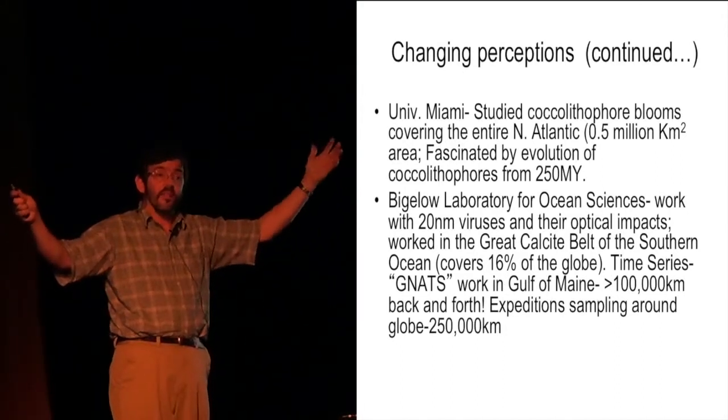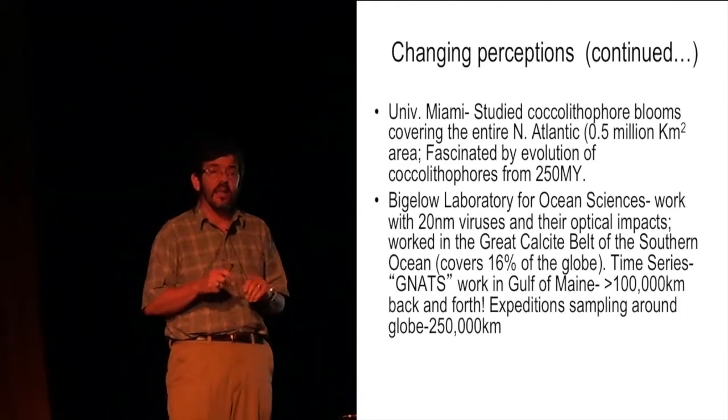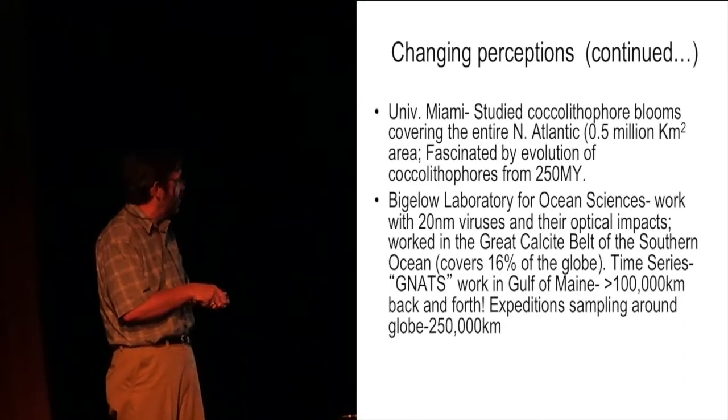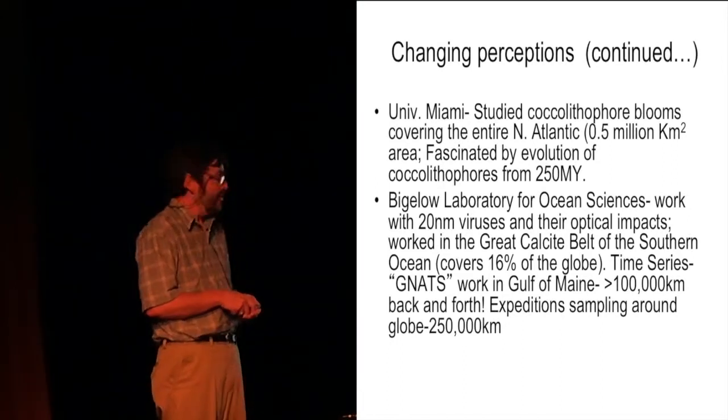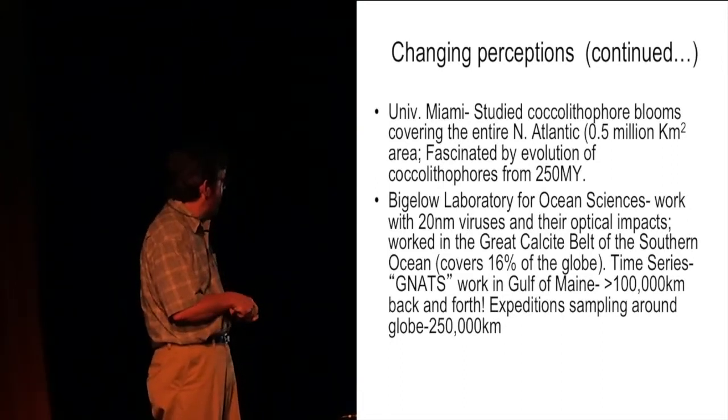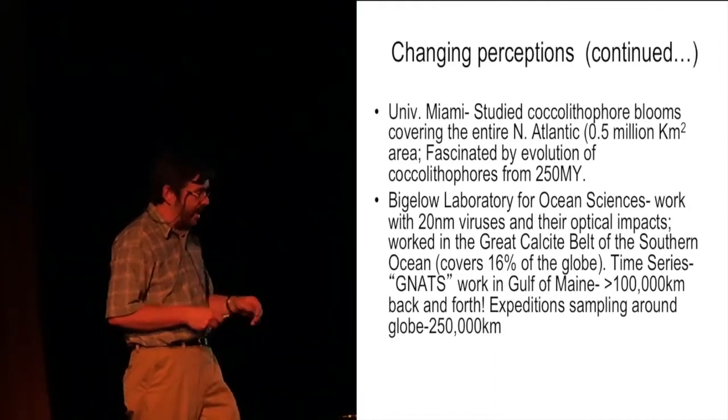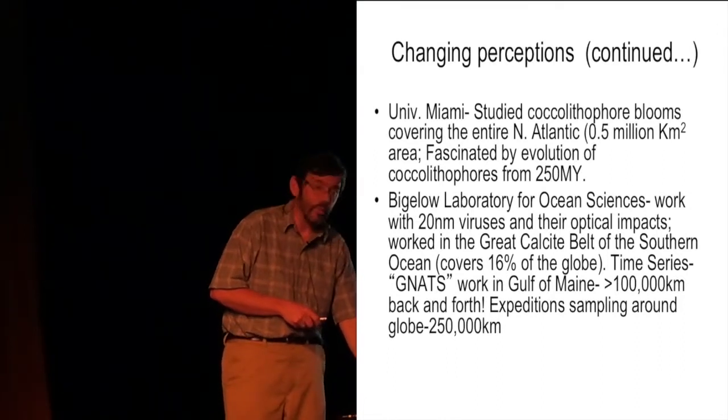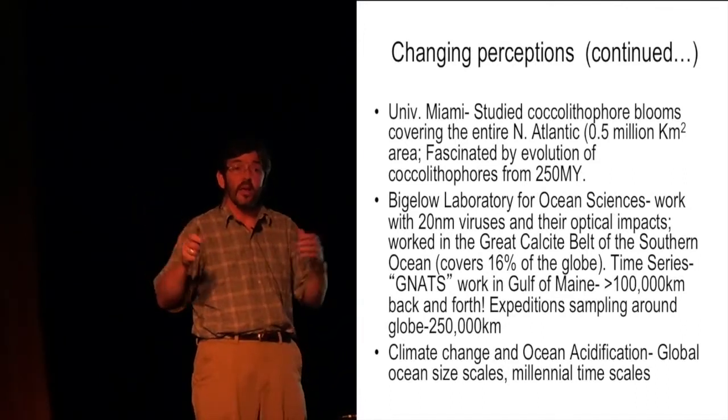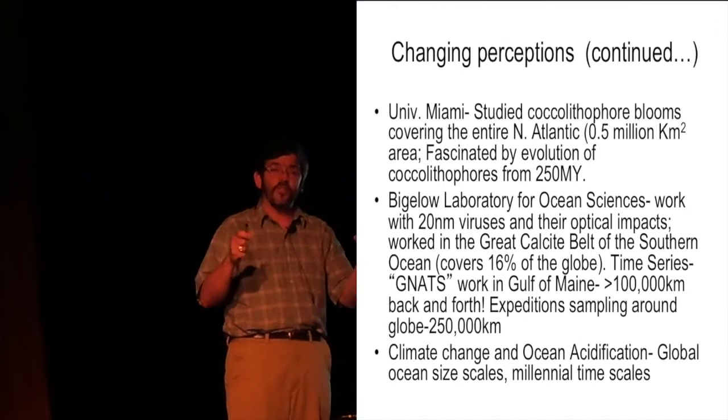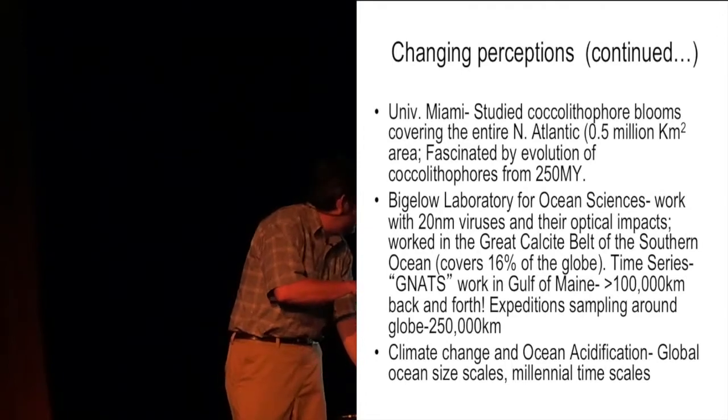And from there we also worked on this thing called the Great Calcite Belt, which covers 16% of the globe. And then we started doing a time series across the Gulf of Maine. We've done over 100,000 kilometers back and forth across the Gulf of Maine on ferries and ships of opportunity. And in all of our expeditions, me and the wonderful people that work with me, we've done about a quarter million kilometers of transit through the world ocean. Now this isn't to brag or anything. It's just to say that our space and time scales, the experiences that we have, very much affect our space and time perception.